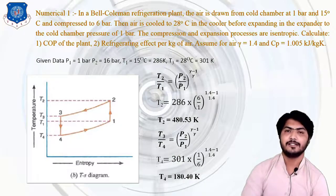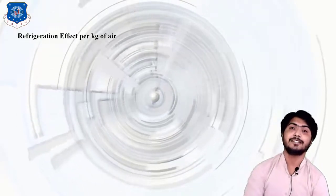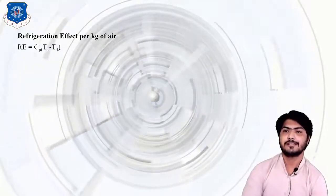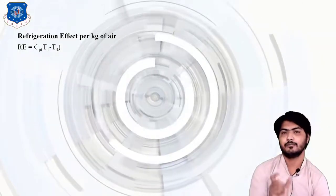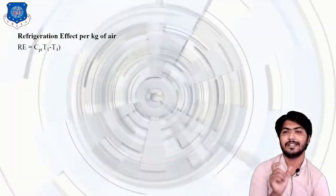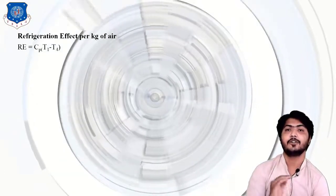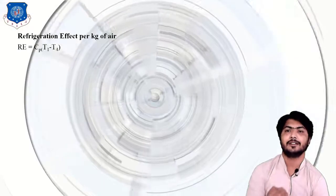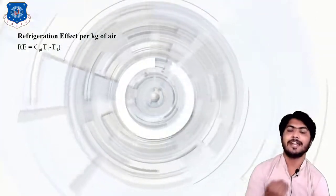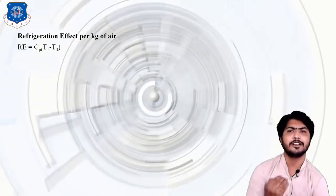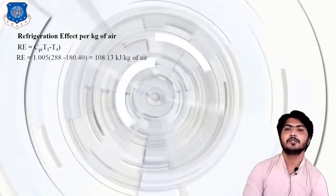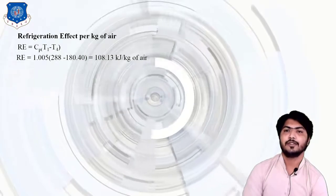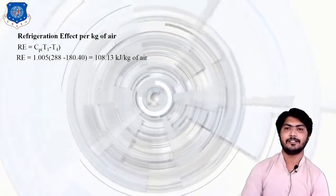Now we calculate the refrigeration effect per kg of air using the formula: RE = CP × (T1 − T4). The refrigeration effect is obtained in the cooler, evaporator, or heat exchanger where the desired cooling is achieved. With M = 1 kg, CP = 1.005, T1 = 286 K, and T4 = 180.40 K, the refrigeration effect = 108.13 kJ/kg of air.